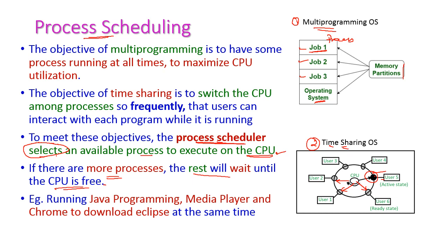Let us see one example. I am going to execute a Java program by using Notepad, and simultaneously I can hear an audio song by using the media player, and simultaneously I am going to download Eclipse by using Chrome. All these jobs will run simultaneously by the CPU without any interruption of any program.